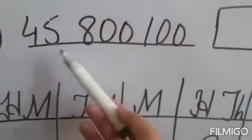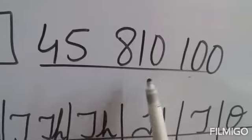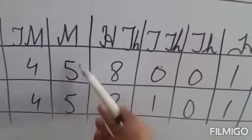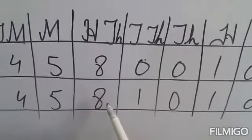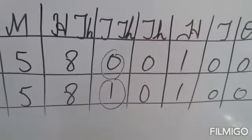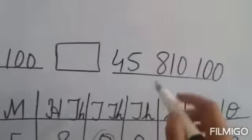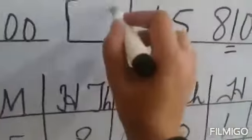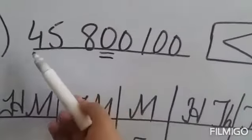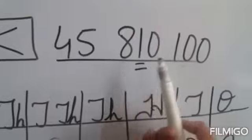Question number 2: 45,800,100 and 45,810,100. By putting these numbers in the place value chart and starting from the highest place value — at 10 millions, millions, and 100,000's place values the numbers are equal. But at 10,000's place value, both numbers are different: 0 is less and 1 is greater. So 45,800,100 is less than 45,810,100.